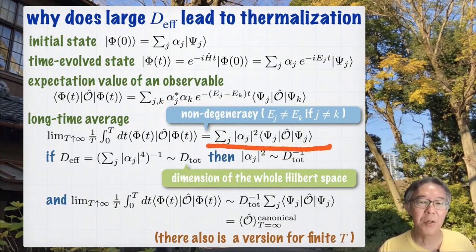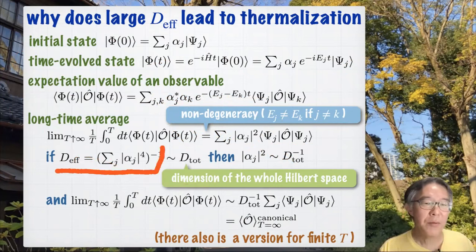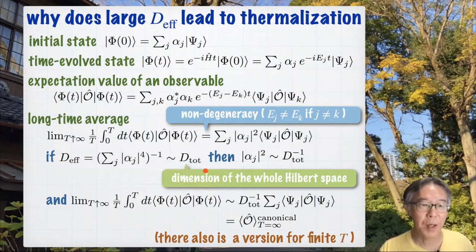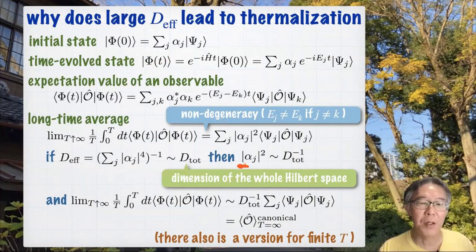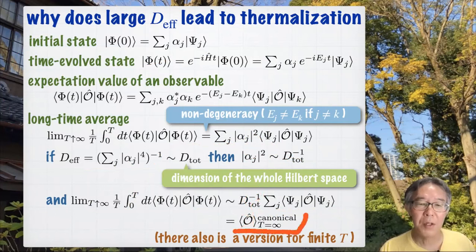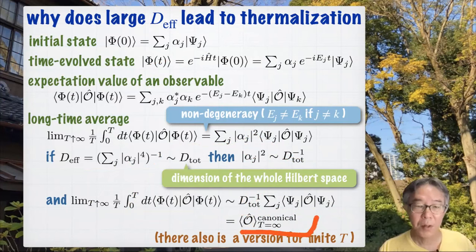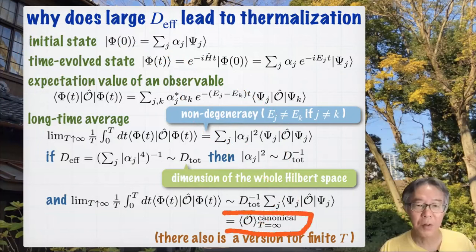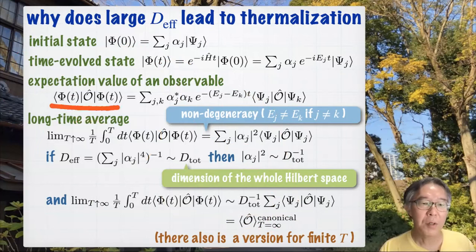This is just a very general observation. Now you assume the effective dimension is very, very large — almost as large as the whole Hilbert space dimension, which is the maximum possible value for D_eff. In this case, all |αJ|² are similar to D_total⁻¹. If you plug this in, the long-time average is given almost as a trace divided by dimension — which is the canonical average at infinite temperature. This tells you that the long-time average of the expectation value is given by the canonical distribution. This is the essence of getting the canonical ensemble starting from quantum mechanical expectation value. There is also a version for finite temperature.